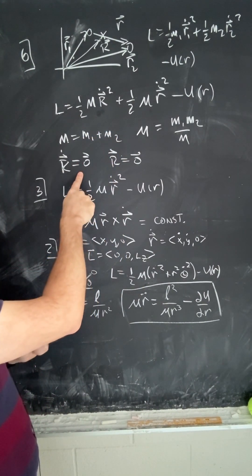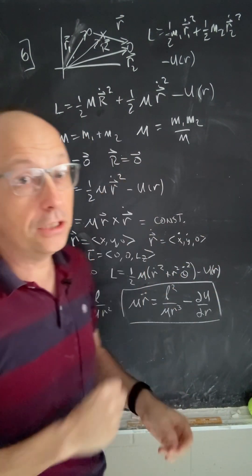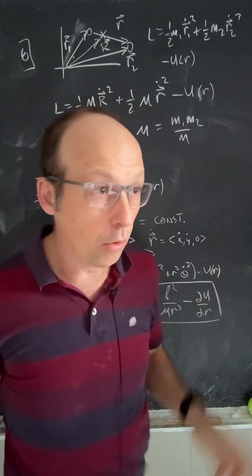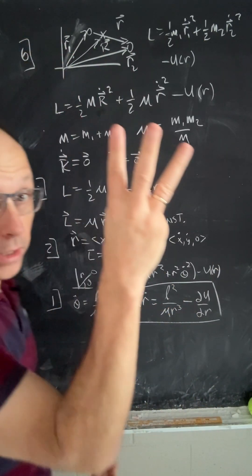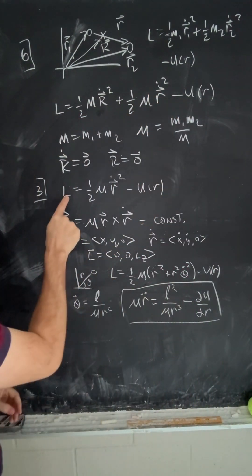So R velocity is zero. It's a constant. We're going to pick it to be zero and the position to be zero. So if you set this center of mass to be at the origin at rest, then now, boom, you just got rid of three coordinates. Now we're down from six to three coordinates.